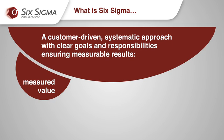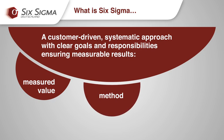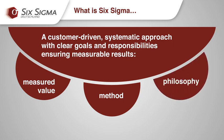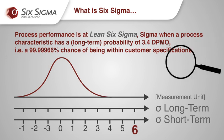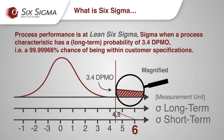The Six Sigma method is the structured method for achieving process improvement. All improvements are implemented within a project framework that employs a uniform phase-oriented project plan. Six Sigma is also a corporate philosophy which is based on numbers, data and facts. All decisions concerning the root causes of poor process performance and defects are made based on measurement data. Process performance is at Six Sigma level when a particular process characteristic indicates a probability of only 3.4 defects per million opportunities of a defect.